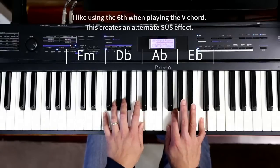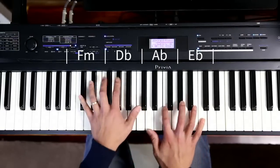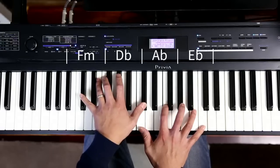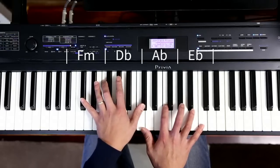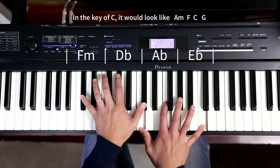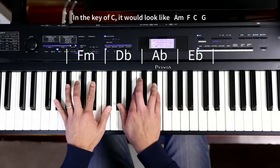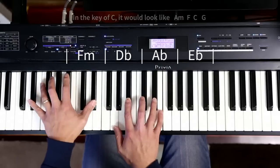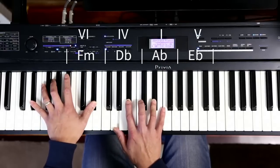Now this progression, if you haven't worked it out yet, it's very common, and I've used it many times in other videos, except I'm usually in the key of C and not A flat. F minor, D flat is the fourth, then A flat is the one of the key, and E flat is the five, so it's a 6, 4, 1, 5 progression.